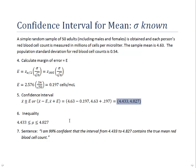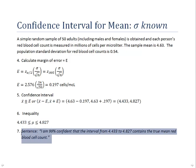When you write a confidence interval, there are three pieces. First, the numerical range. Second, write it as an inequality to make clear we are studying mu, the population mean: 4.433 < mu < 4.827. Third, conclude with an English sentence summarizing the findings. In this case: I'm 99% confident that the interval from 4.433 to 4.827 contains the true mean red blood cell count.